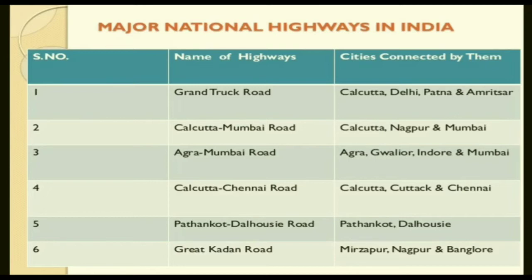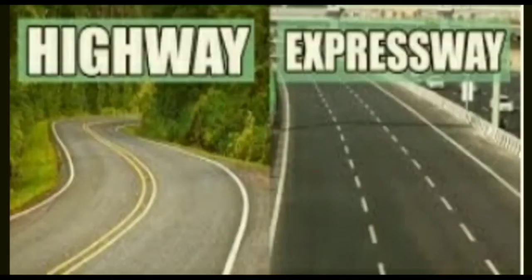India has many national highways running from corner to corner. The most important and oldest is the Grand Trunk Road, running from Calcutta to the Punjab region. Then there is the Calcutta-Mumbai road connecting Calcutta, Nagpur, and Mumbai. There is also the Agra-Mumbai road connecting Agra, Gwalior, Indore, and Mumbai; the Chennai-Calcutta road; and the Pathankot-Dalhousie road in the northern Punjab region.